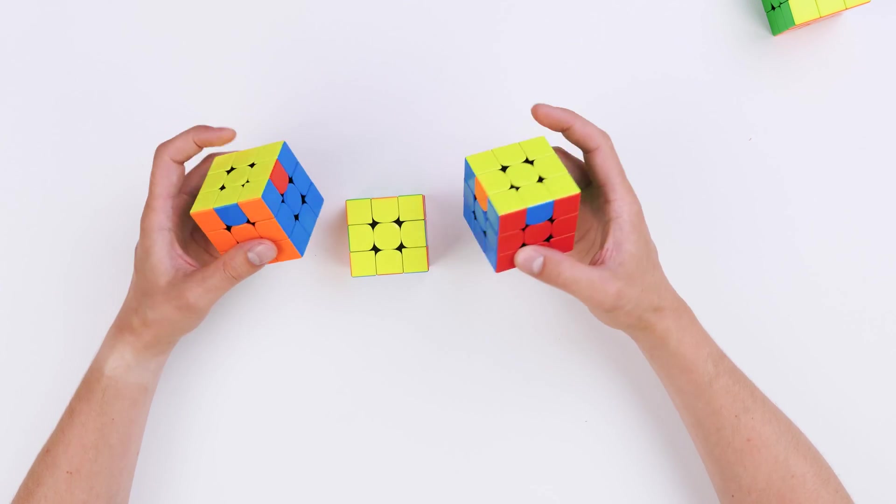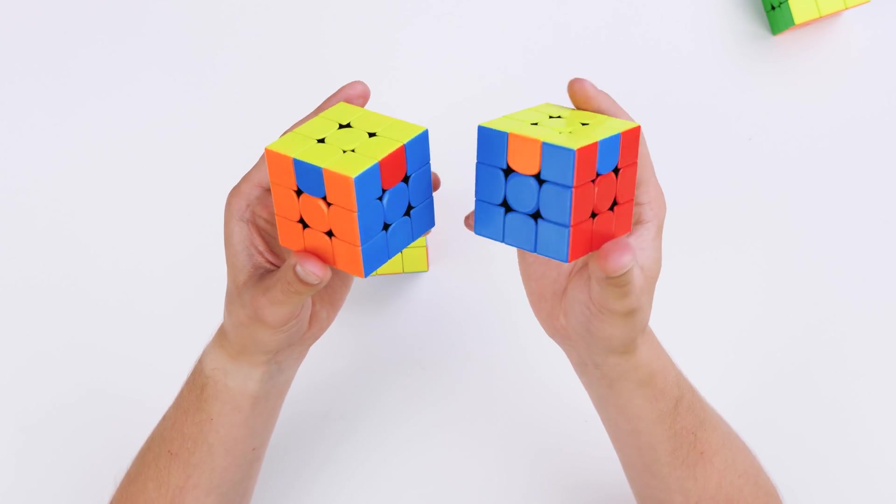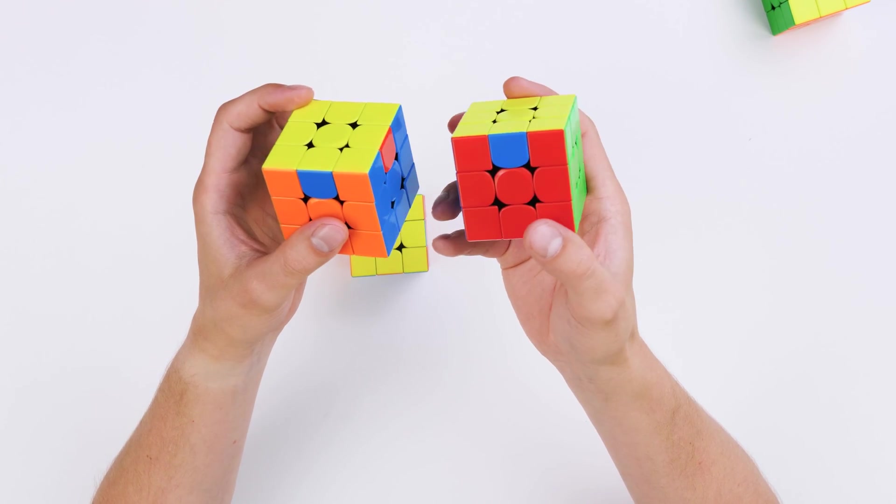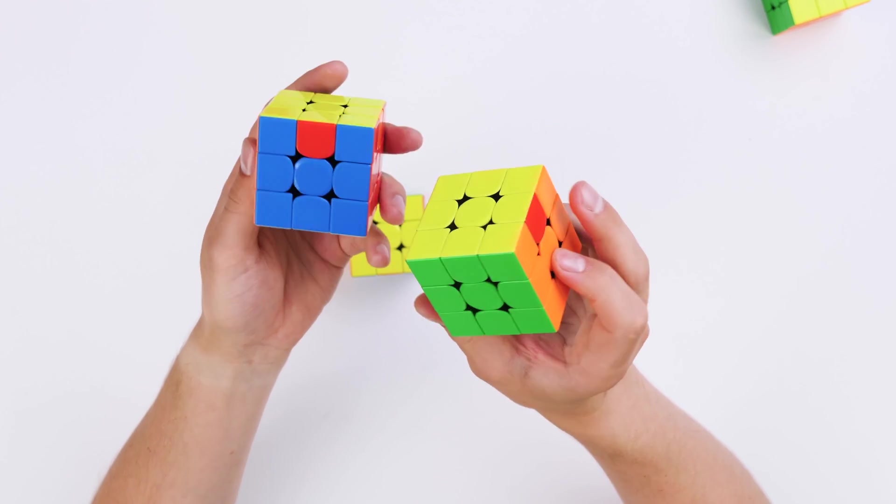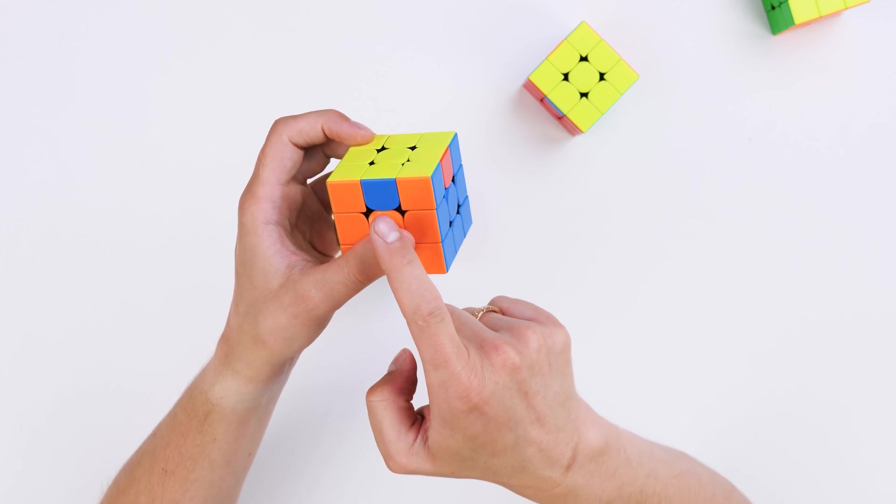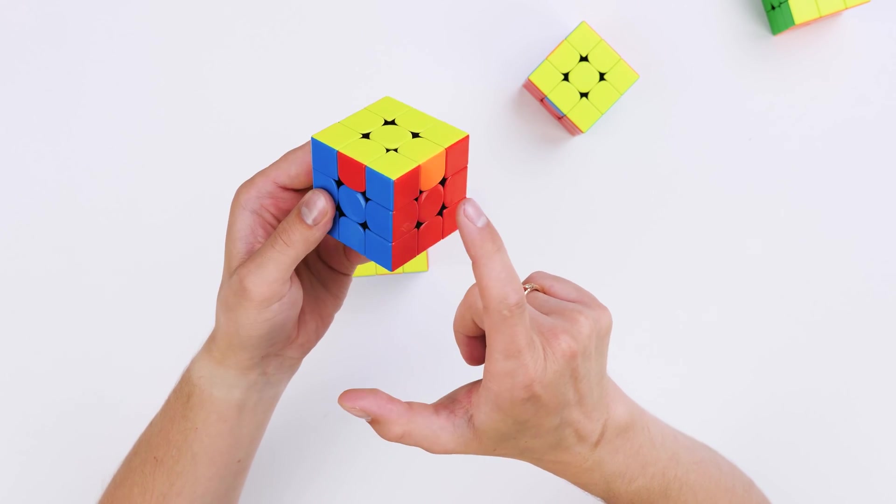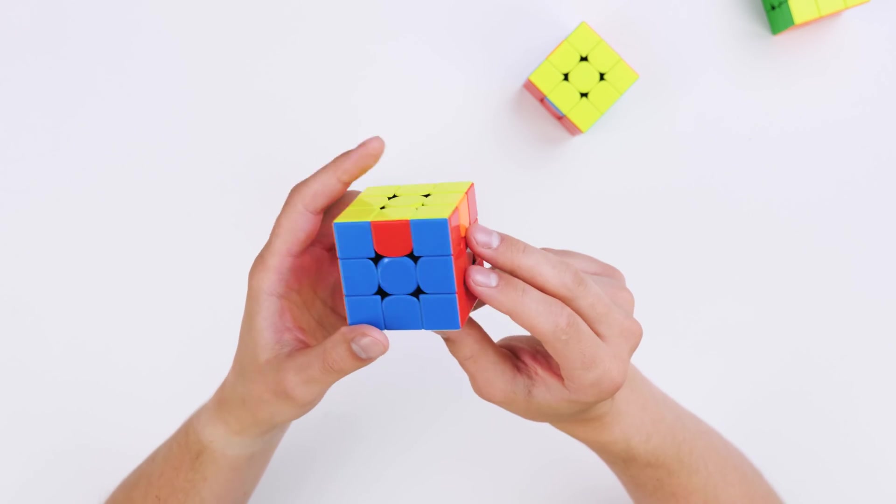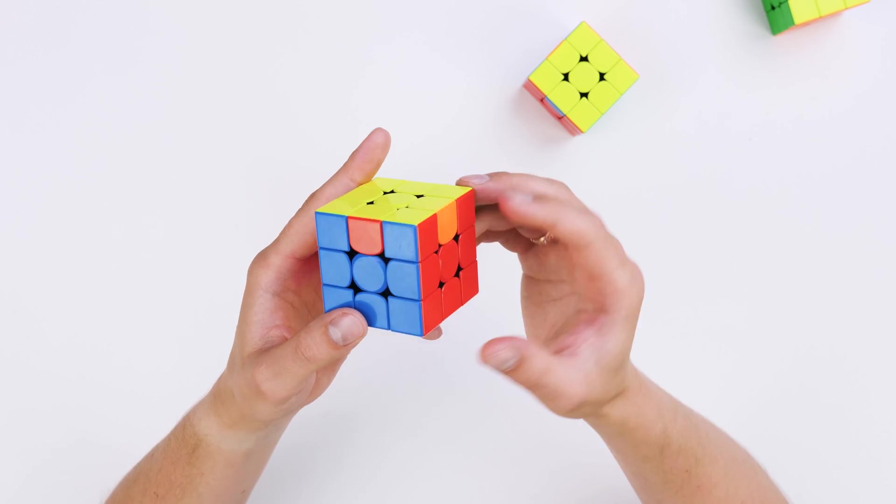After using this algorithm, as you can see, we have this situation. Everything looks almost assembled, but now we need to work with edges. And the edges are here. And here we need to learn another, a bit easier algorithm called U-perm.